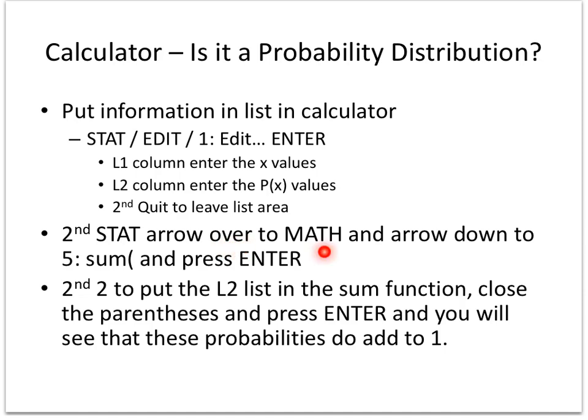Second stat over to math, and arrow down to sum, because if you remember with the formula, what we're going to do is we're going to add all these to see if it's even a probability distribution. Well, when I add all of these up, I sum them, and I tell it to put in my probability column, which is L2. I close the parentheses, and for it to be a probability distribution, that sum better equal 1, otherwise it's not a probability.